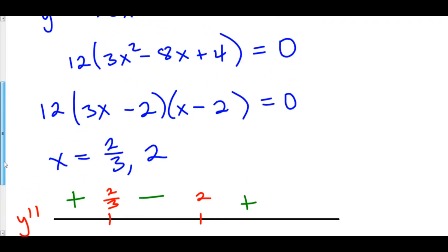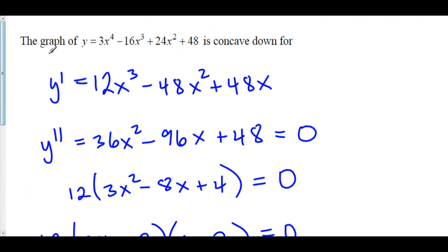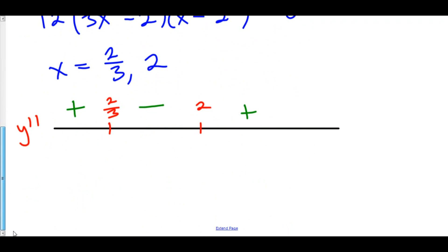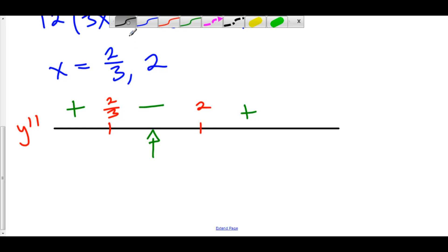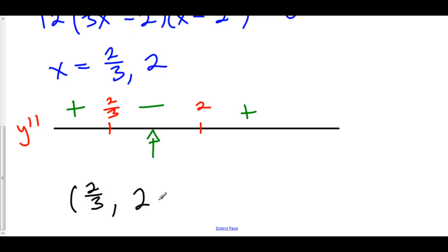The question asks where y is concave down. y is concave down when the second derivative is negative, which occurs on the interval (2/3, 2) — not including the endpoints. That is the answer.